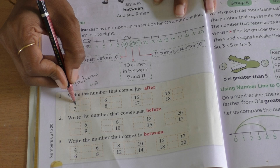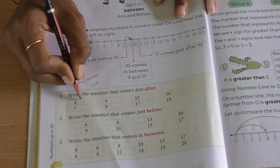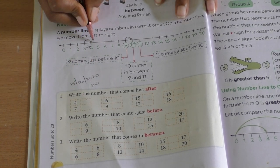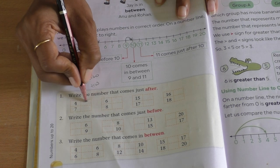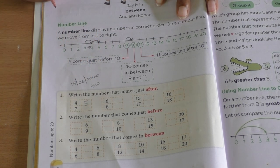So here they have given you 4. So the number which comes after 4 would be 5. So you write here 5.